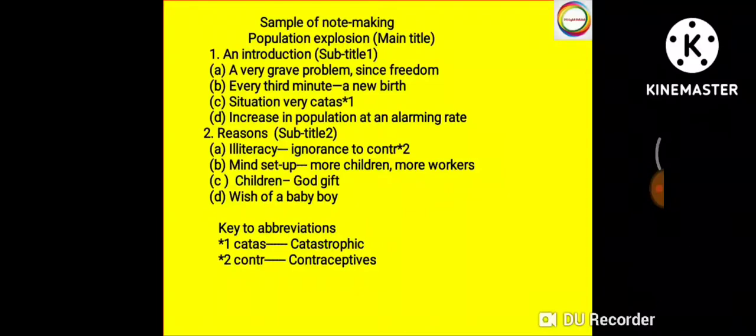Below is given 'Key to abbreviations.' It's better to keep this in a box. There is a specific way to expand abbreviations. As explained here, 'CATAS' with star one, and then its full form or full expansion is written: 'catastrophic.' This is the way in which we attempt the question of note-making.